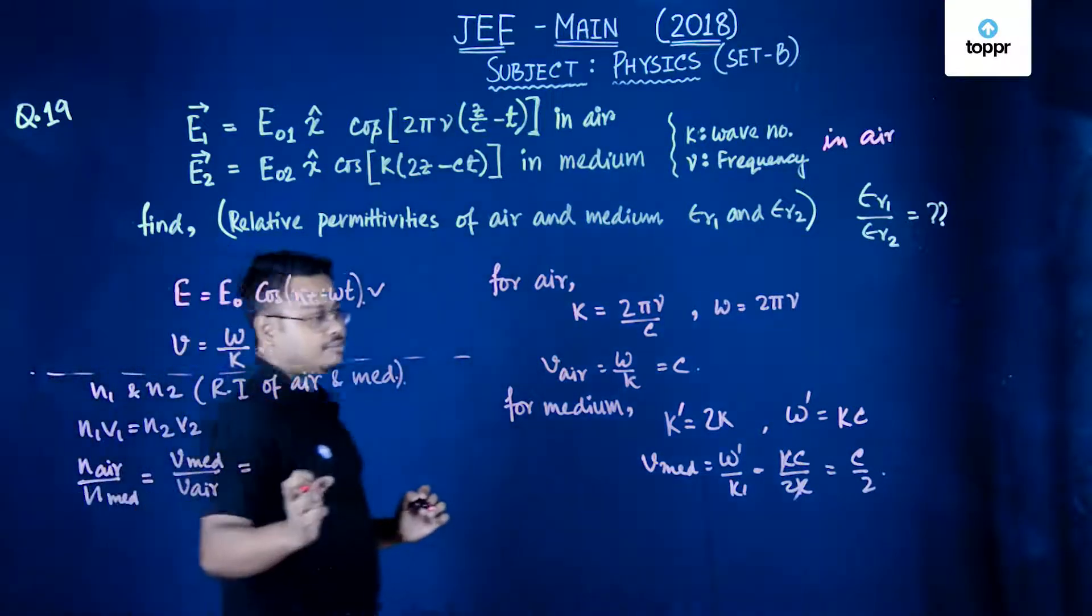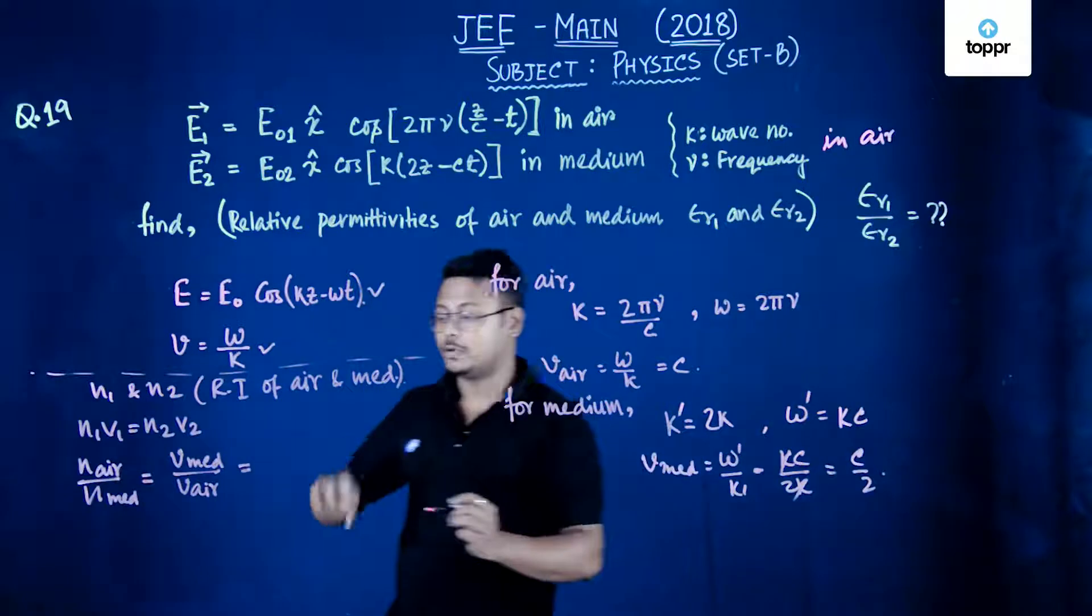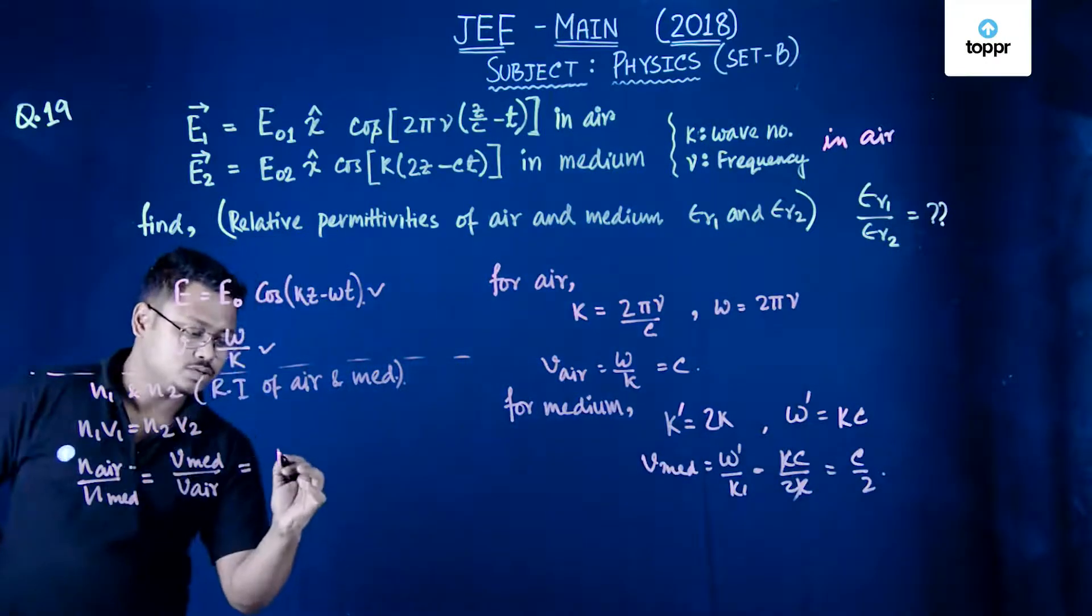So what will be the answer? velocity of medium is c by 2 upon c. So this will be equals to half.